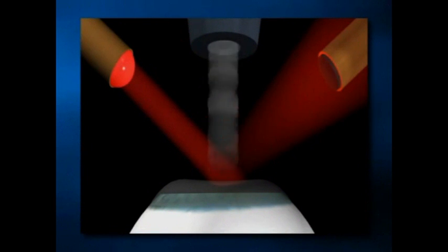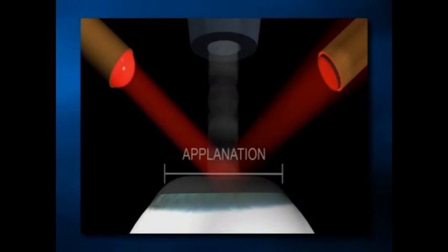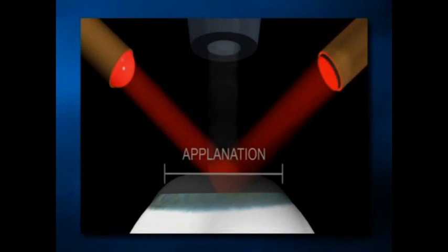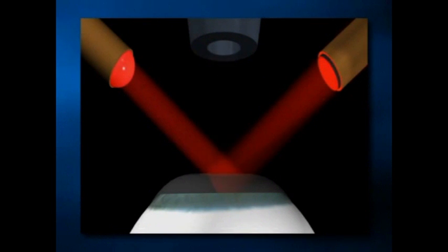As the velocity of the air pulse declines toward zero, the cornea returns to its natural shape and once again passes through an applanated state. The reflected light again reaches maximum intensity and causes a signal peak at the detector, triggering the pressure transducer to record the applanation pressure a second time. The cornea completely returns to its normal configuration and the sequence is concluded.